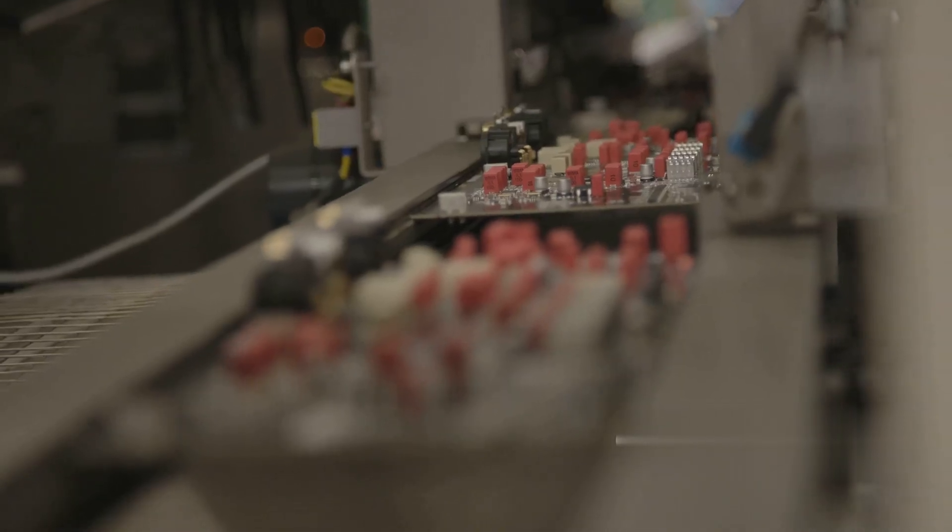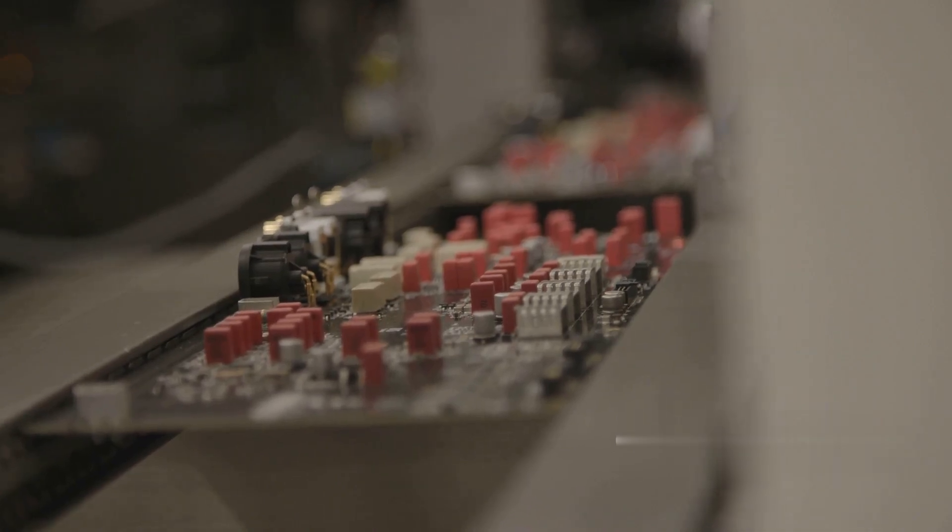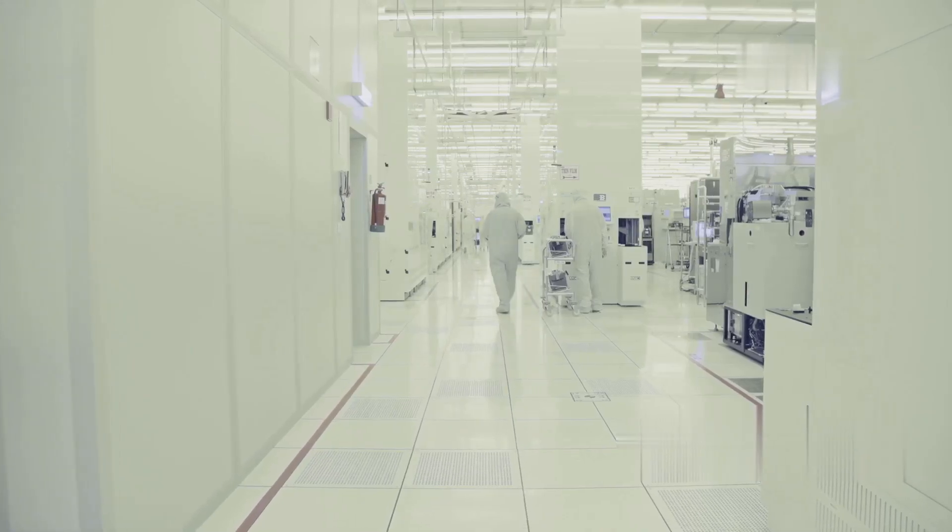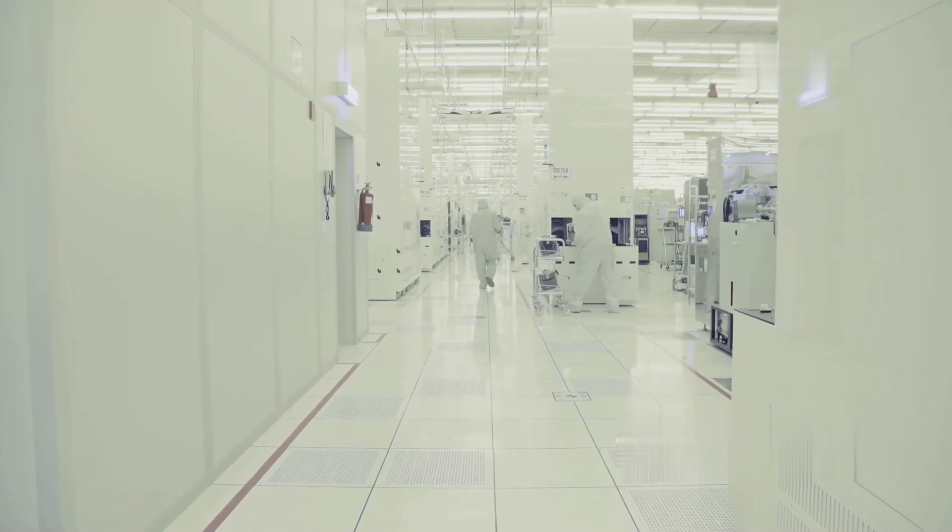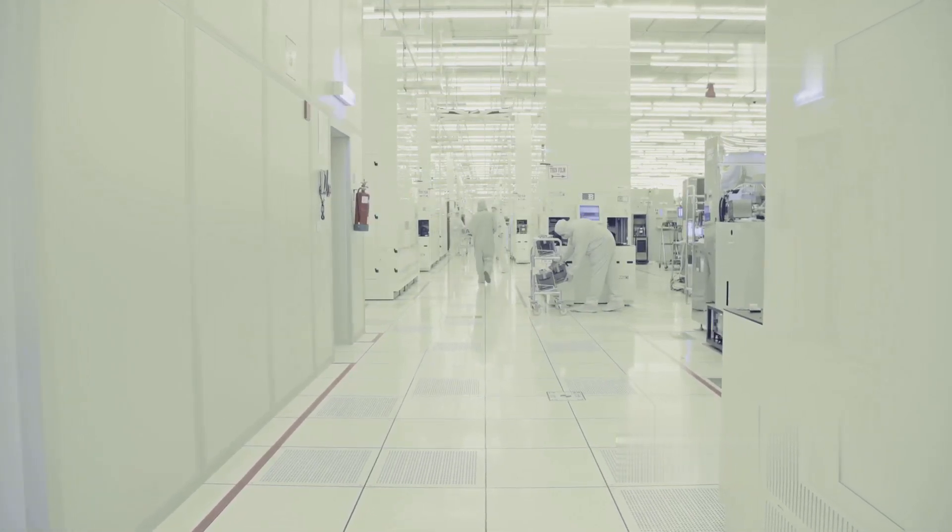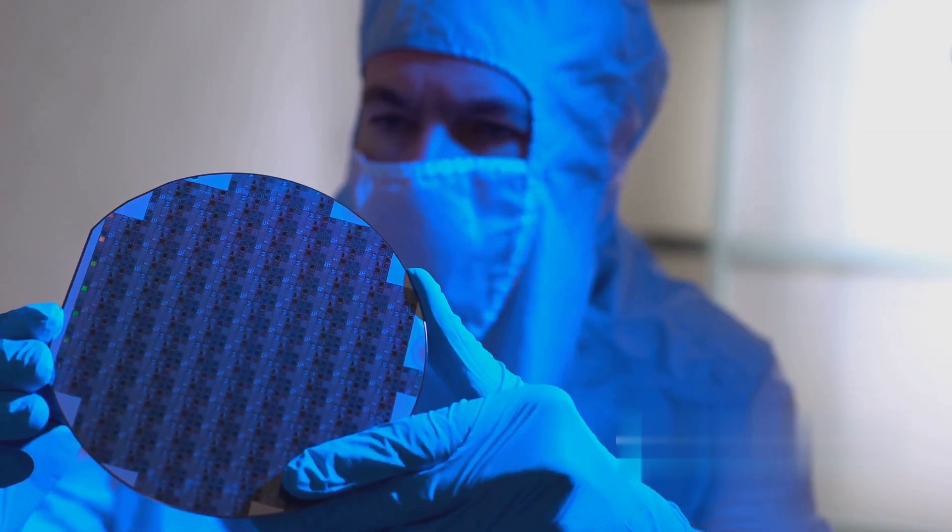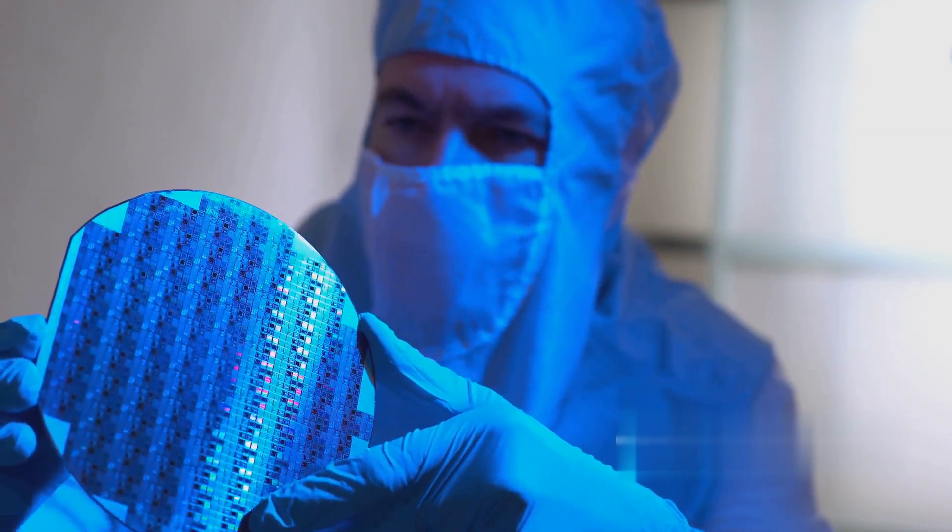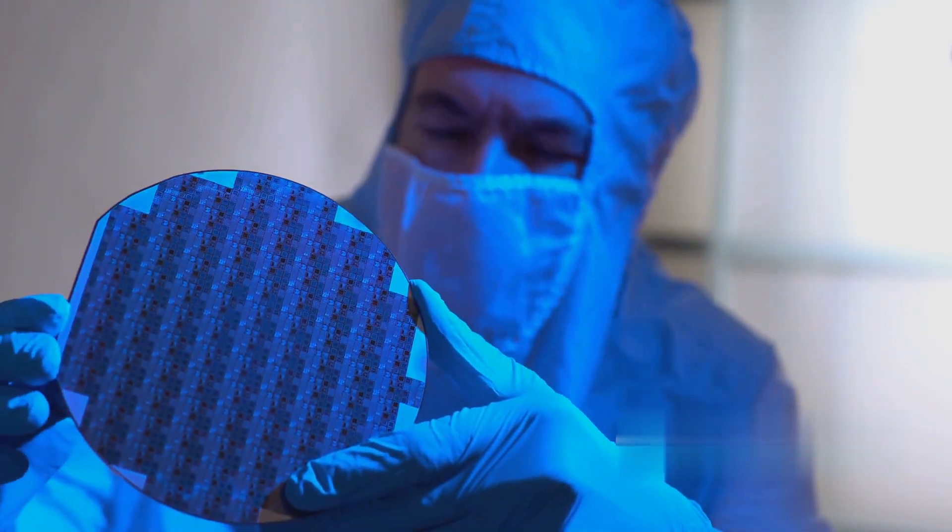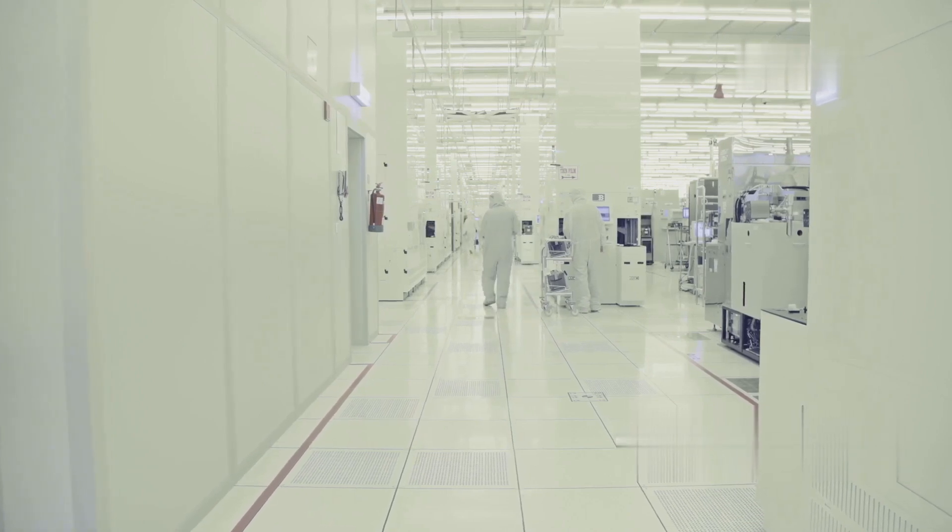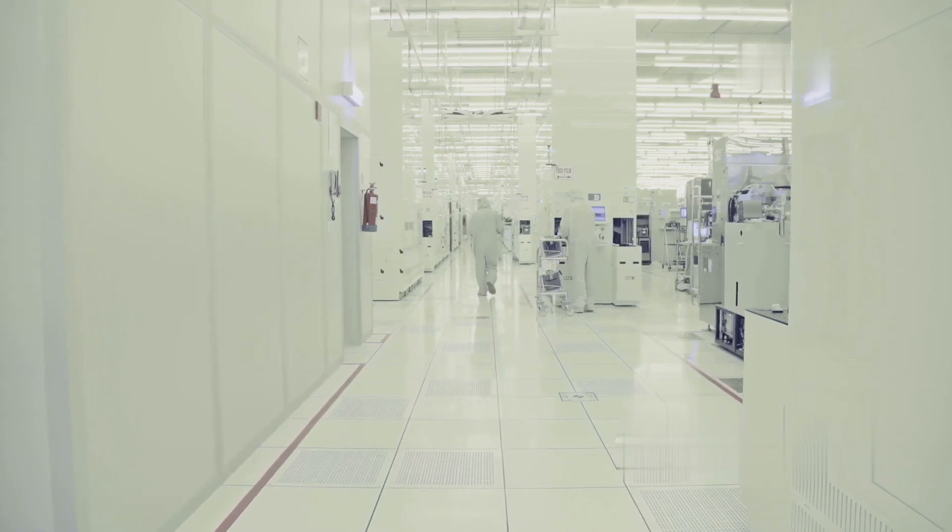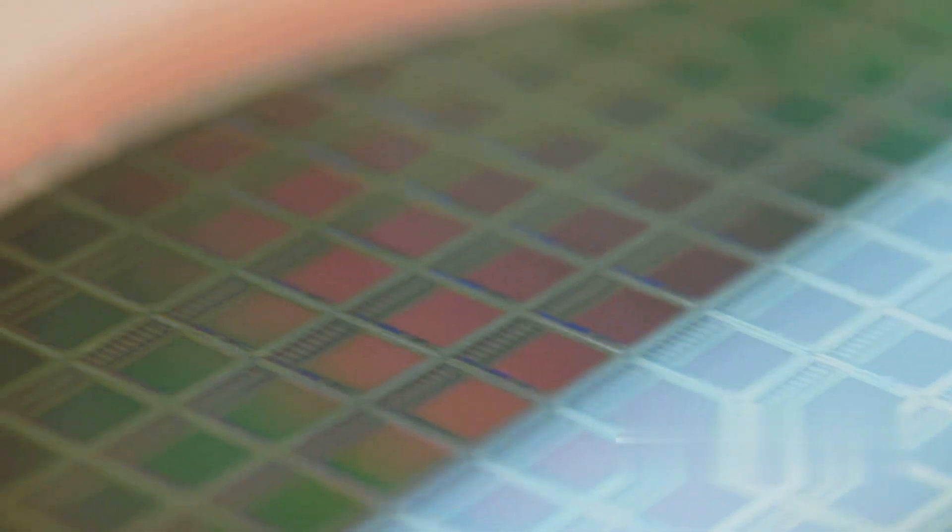The polished wafers undergo a cleaning process to remove any remaining contaminants. This involves a series of chemical baths and rinses, ensuring that the wafer surface is pristine and free of any particles that could interfere with the subsequent fabrication steps. The wafers are then coated with a thin layer of silicon dioxide, an insulating layer that acts as a barrier between the silicon substrate and the circuits built upon it. This oxide layer provides electrical isolation, preventing unwanted current leakage between different parts of the circuit. It also serves as a mask during subsequent processing steps, protecting specific areas of the silicon wafer from modification.